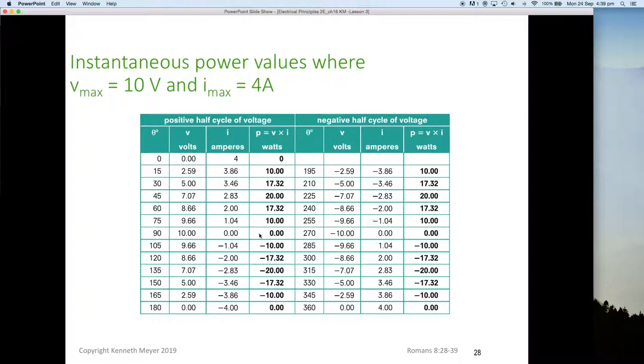Look what happens now in the negative half of the cycle. The power that was stored in the first quarter is now being fed back into the circuit. So at 105 degrees we get 9.66 volts times minus 1.0 amps, we get minus 10 watts coming back into the circuit. At 135 degrees, we get 7 amps times minus 2 volts giving us minus 20 watts. At 165 degrees we've got minus 10 in the power column and then at 180 we've now finished half a cycle, we're back to zero.